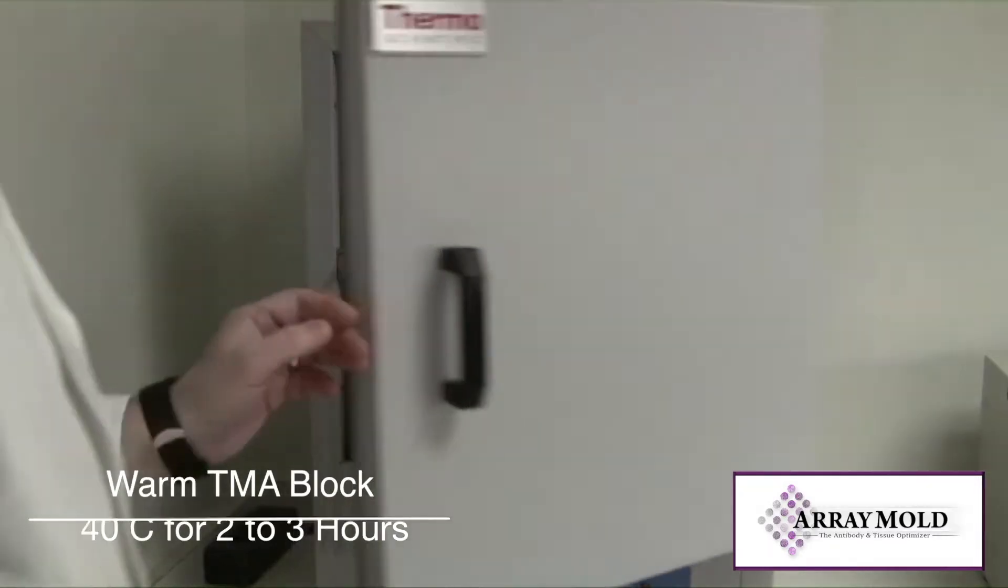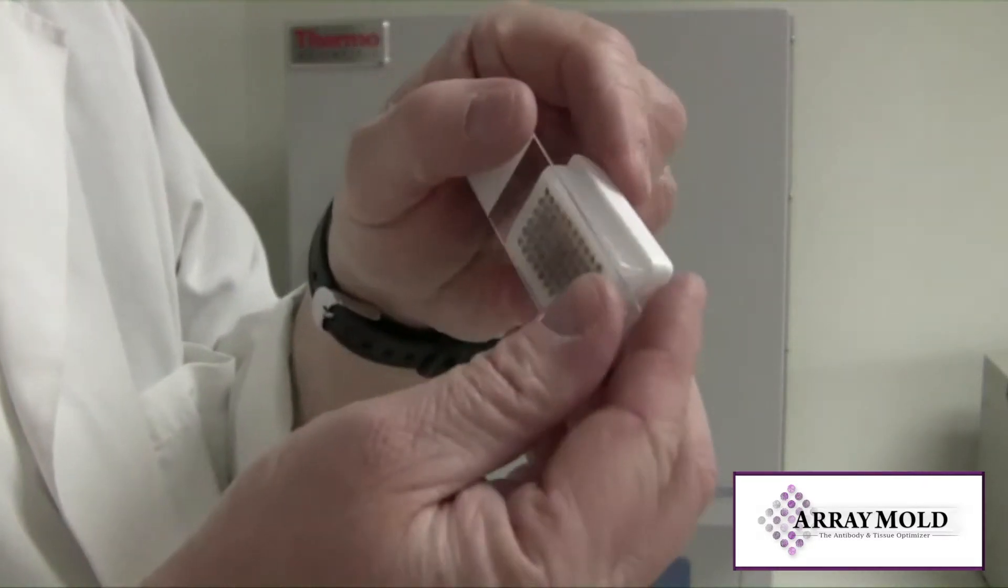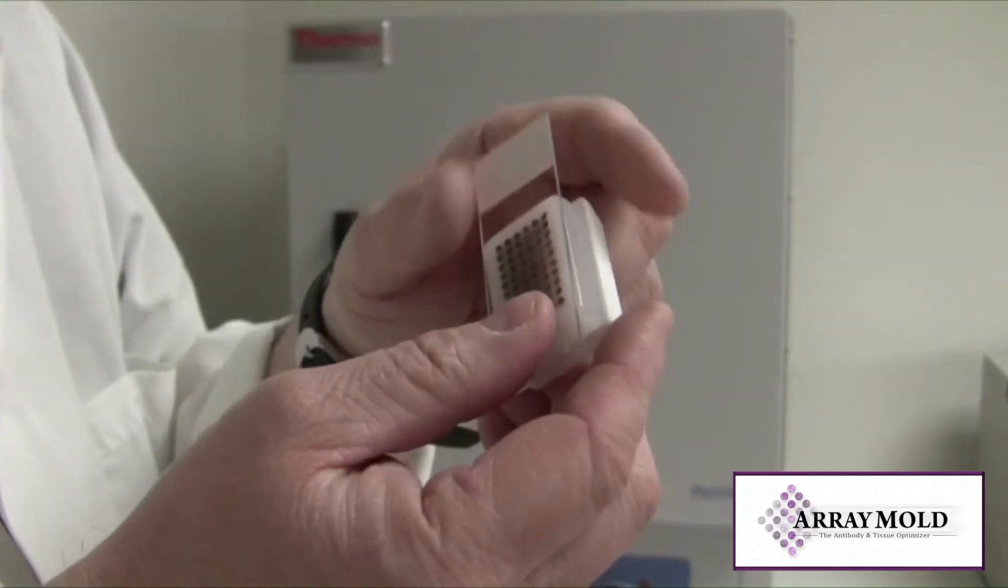Now you'll need to remove the paraffin block and slide from the oven, but don't separate them yet. You will need to heat up another slide around 70 to 80 degrees Celsius by itself. I'll explain why in a moment.